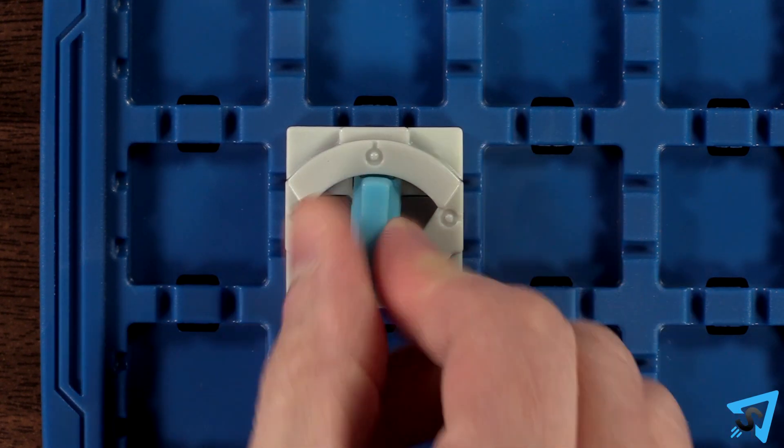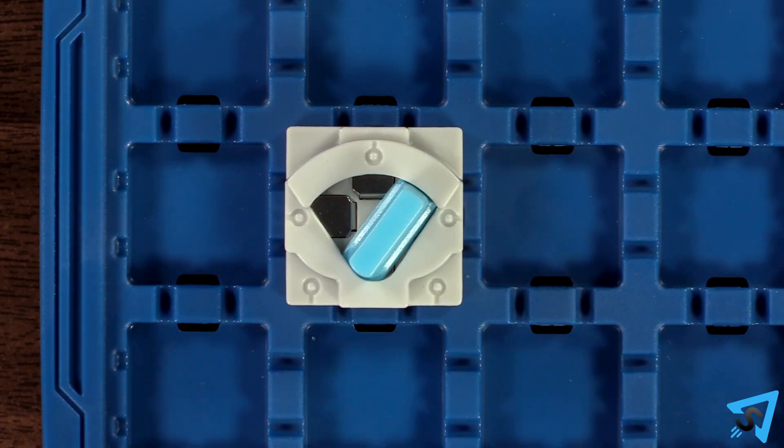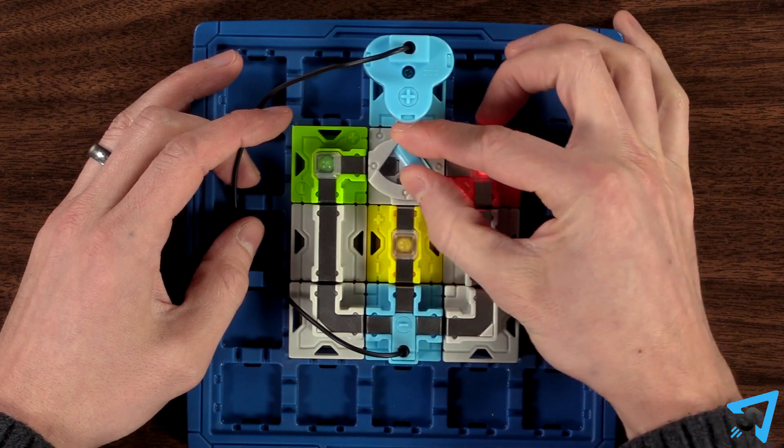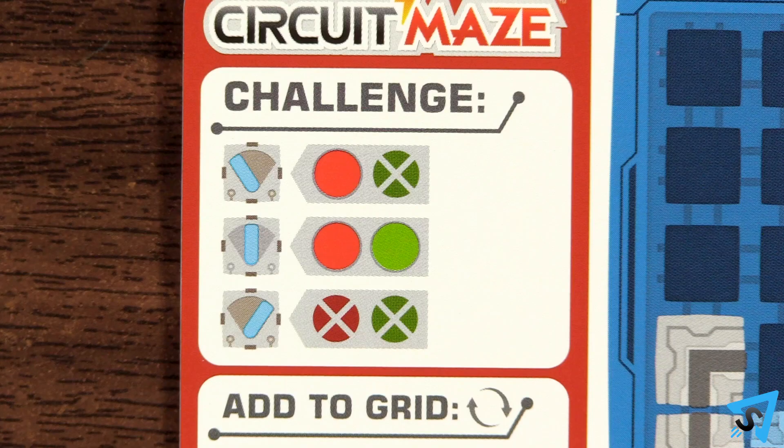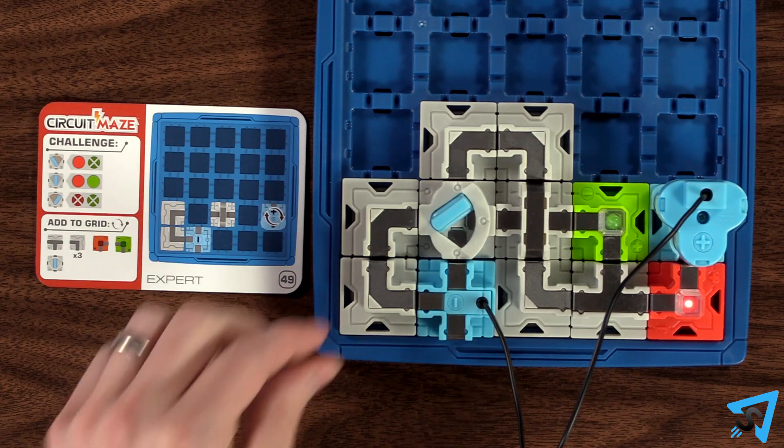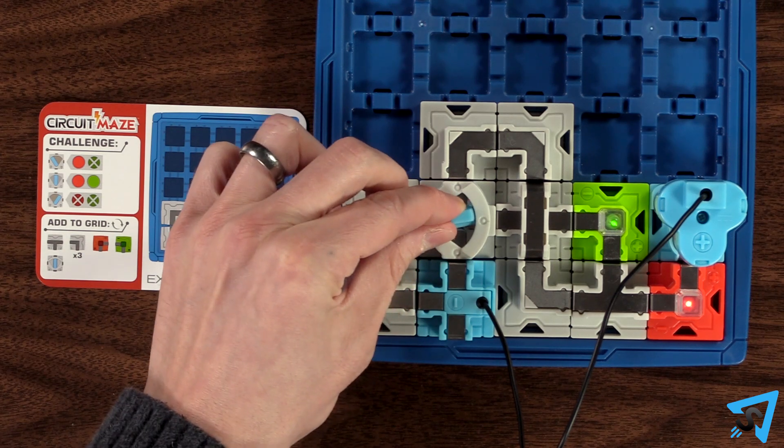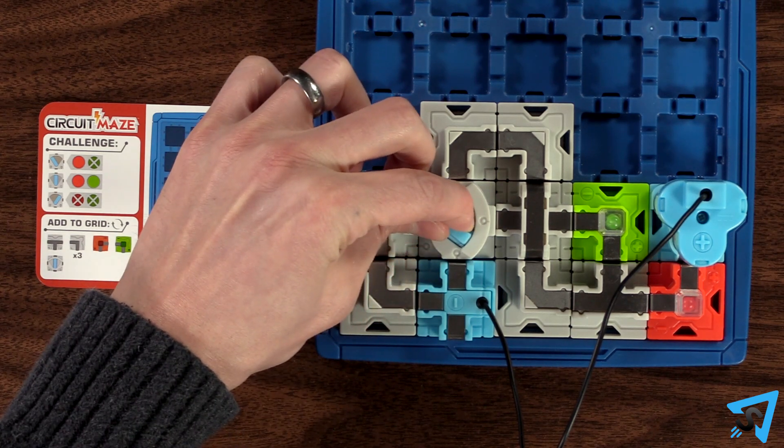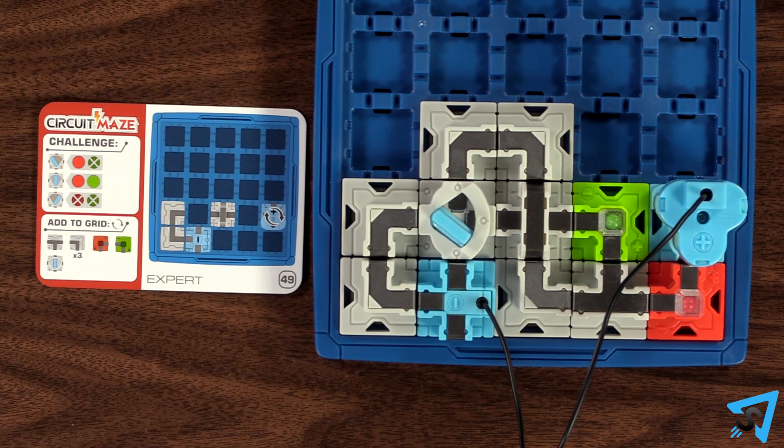The switch token allows you to move the lever to the side of the token for where the electricity will flow. The challenge card will indicate the multiple configuration objectives for each position of the switch. The correct solution will incorporate each switch location with different beacons illuminated while all the tokens remain in the same space.